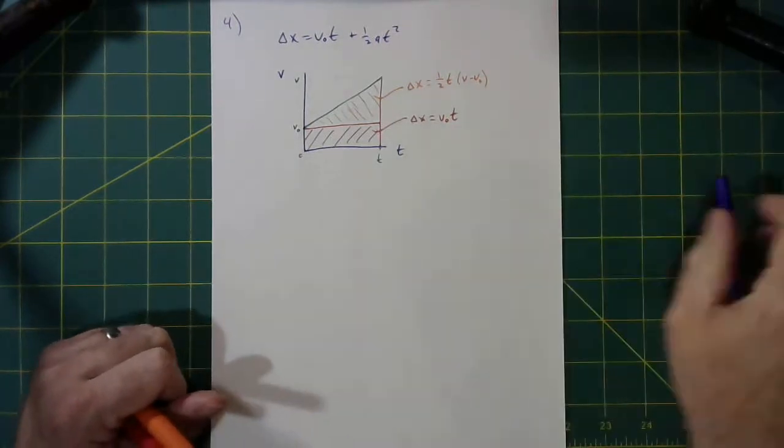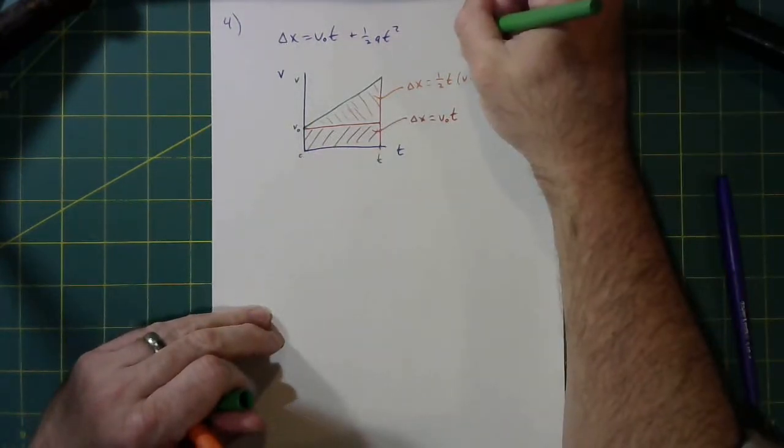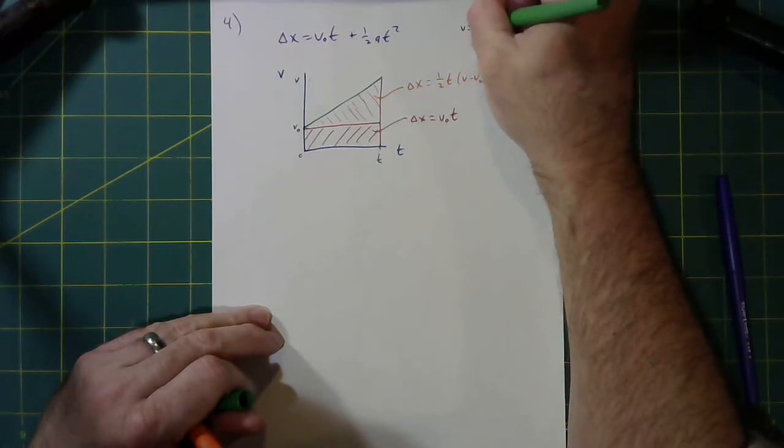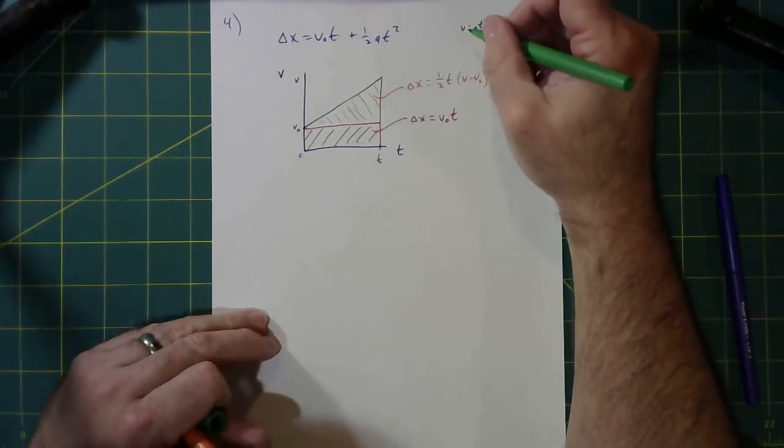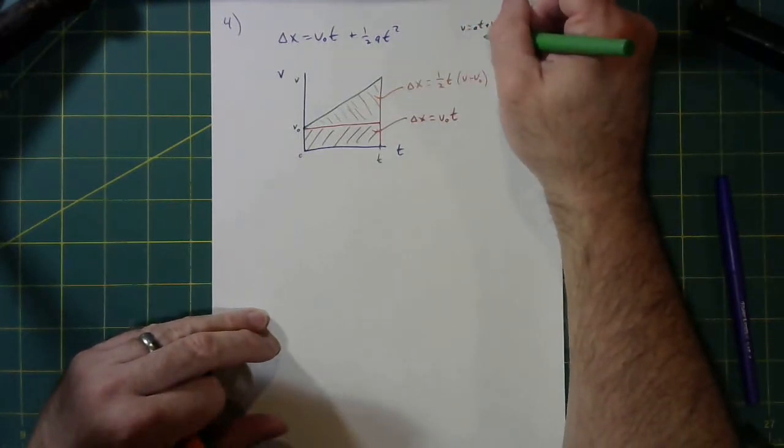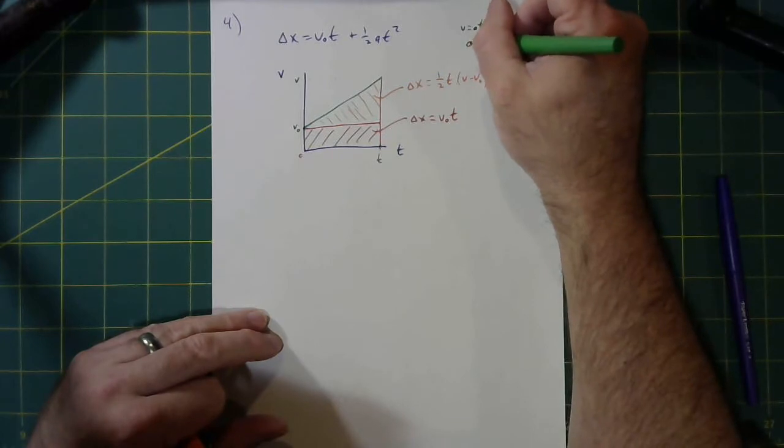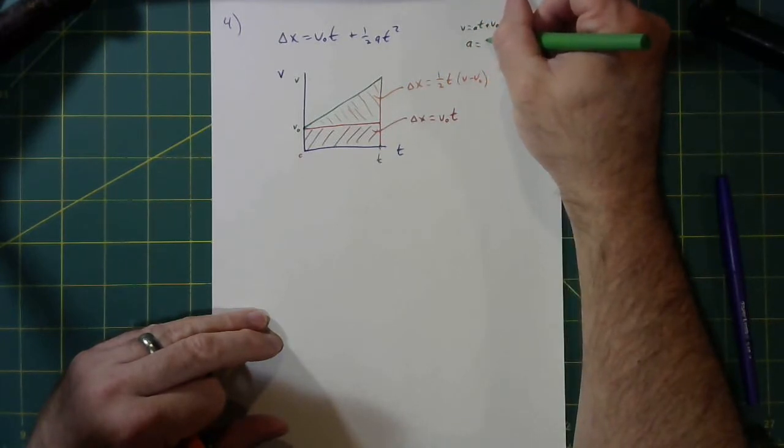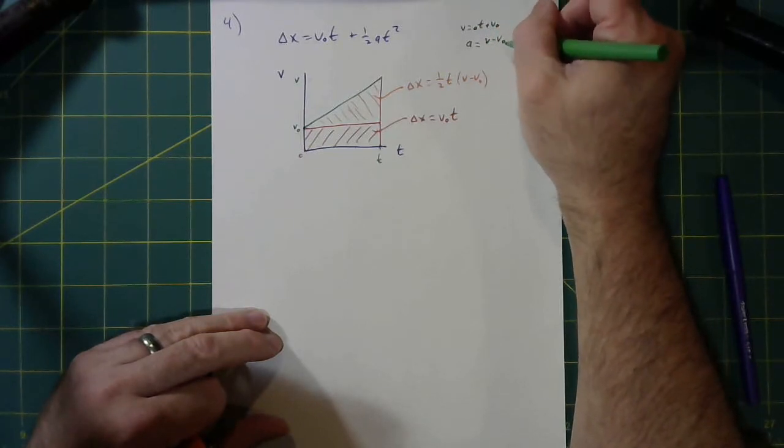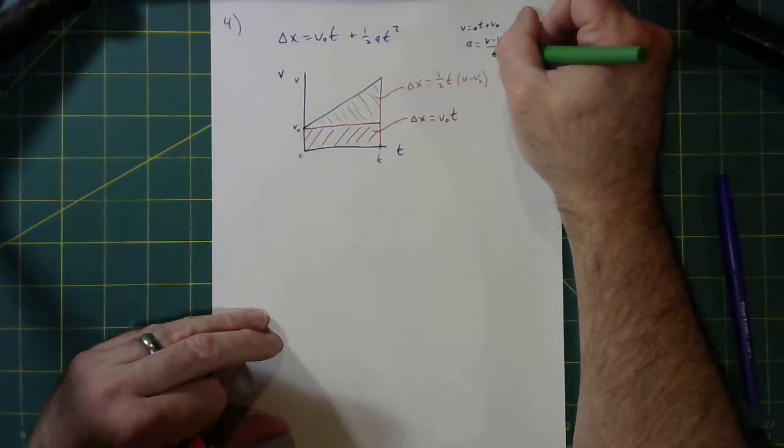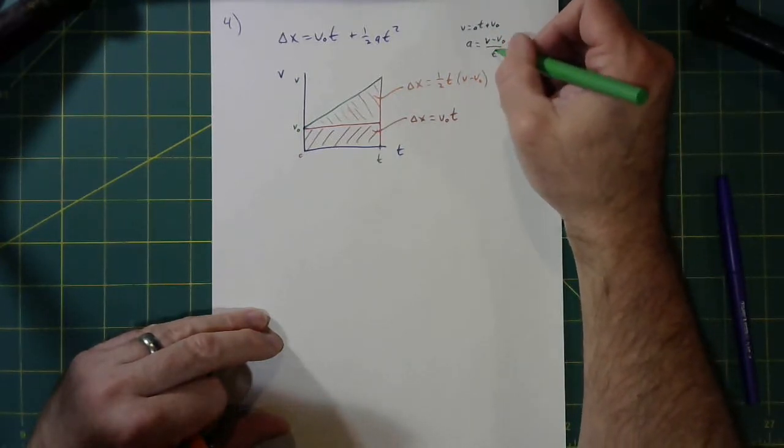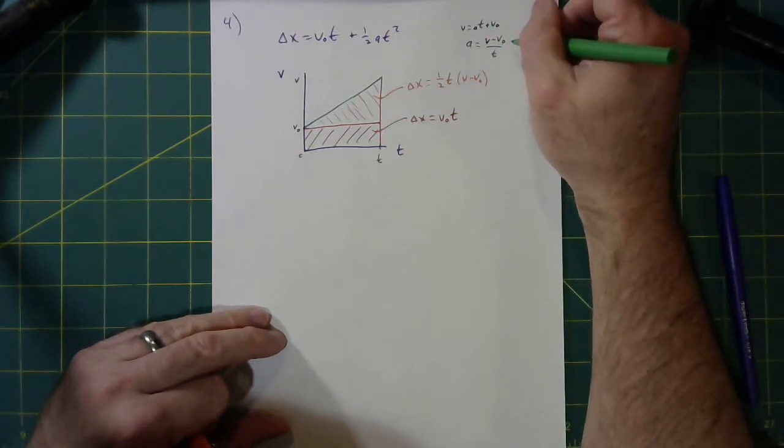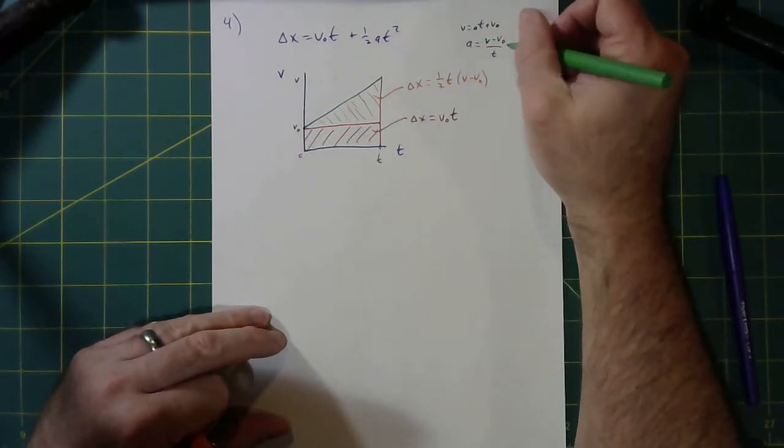Now, that doesn't quite look like that. But if you recall that v is at plus v naught, which we had just derived from this experiment with the buggy rolling or the cart rolling down the ramp last year. So remember, rearrange this, we could get that a is v minus v naught over t. Or better yet, rearrange, move the t to the other side. v minus v naught would be at. That's really what I want to say is v minus v naught is at.